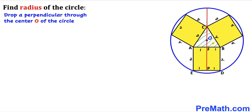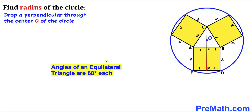We focus on triangle ABC. We can see that this is an equilateral triangle since all side lengths are 2 centimeters each. We know that the angles of an equilateral triangle are 60 degrees each, so all three angles are 60 degrees.